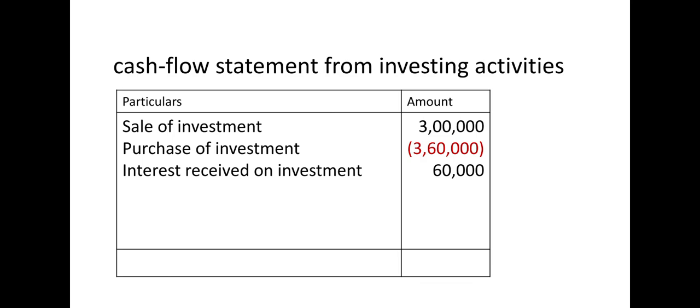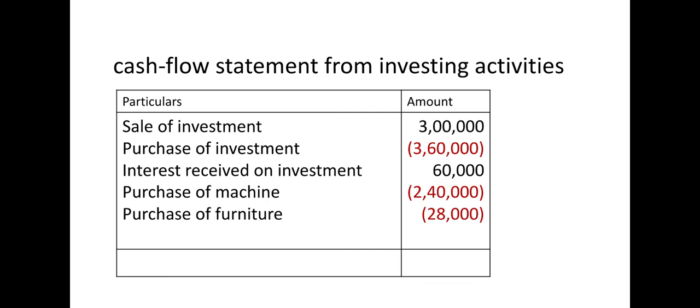The outflows are the purchase of machine and the purchase of furniture — the missing amounts we found. If you look at the inflow amounts versus the outflow amounts, the outflow is more, so the answer is negative. The answer is negative 2,68,000 — that is the cash flow from investing activities. If you have a question about investing activities in the syllabus, this exercise covers it well. For further practice, refer to the Marvel or Gala paper set — that is your homework.